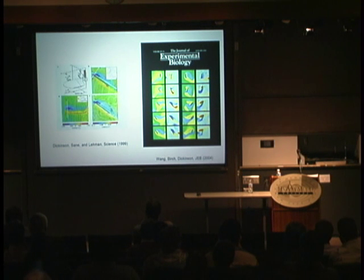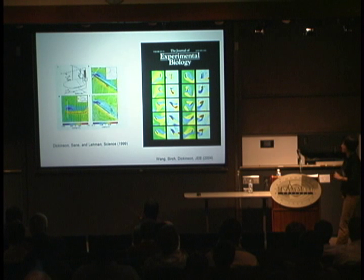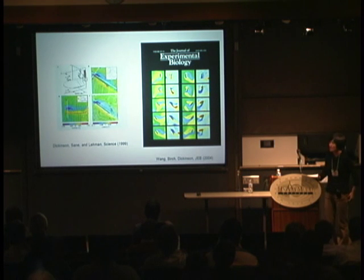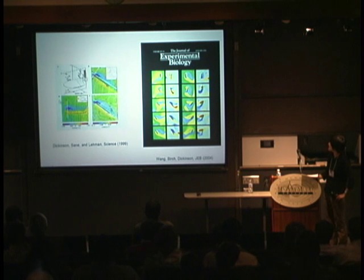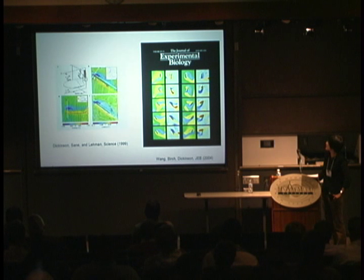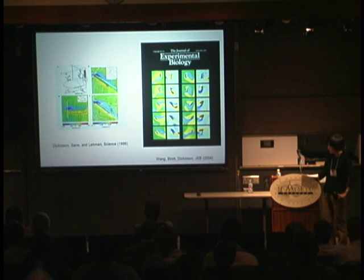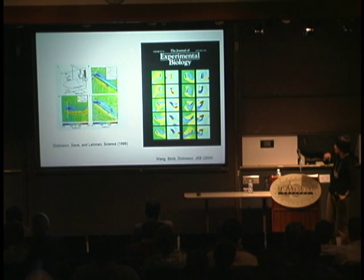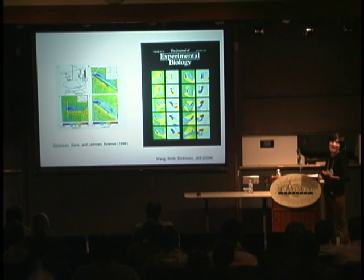I don't trust computers — they should not always be trusted. So the next question is: here is a simulation, how well does it compare with experiments? This is possible, especially at these relatively low Reynolds numbers. Here is a robotic wing done by Dickinson's group, driven back and forth. Using particle image velocimetry, we can measure the flow field and deduce the vorticity field, then compare with computation.